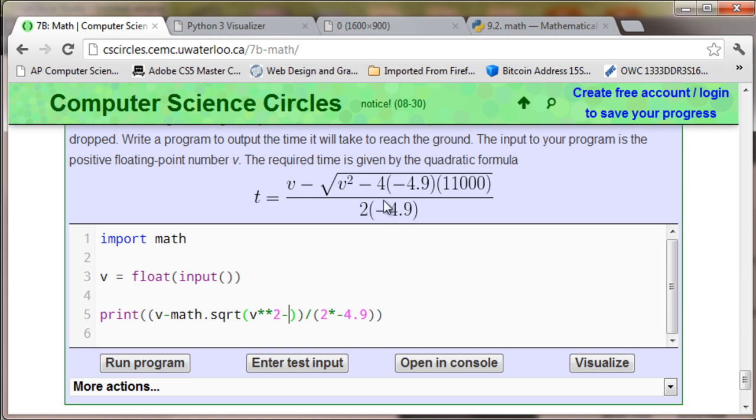And what we want to do is we want to first do 4 times negative 4.9 and then times 11,000. So in order to do that, we use the parentheses and we do 4 times negative 4.9. And then we want to put more parentheses around here because now that we've gotten rid of this piece right here, now we want to multiply it by this 11,000 before we subtract it from the V squared to the 2nd power.